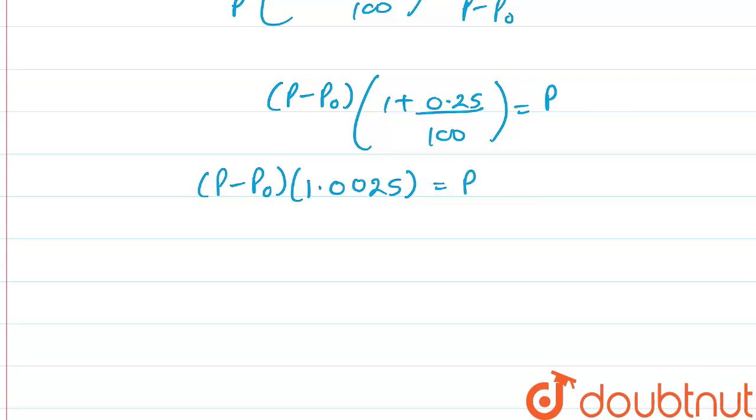Now solving for p, we will be getting p into 0.0025 equal to 1.0025 p0.